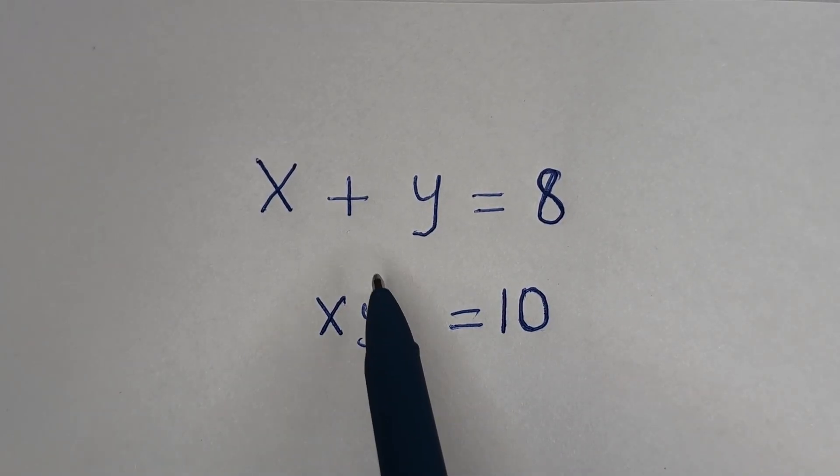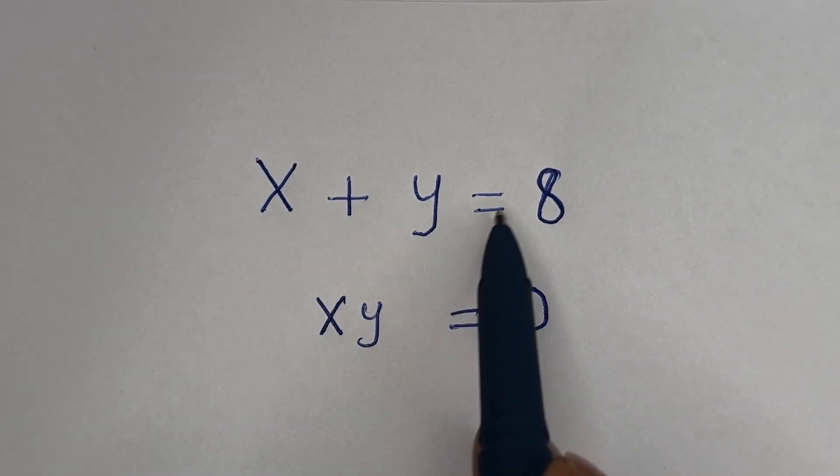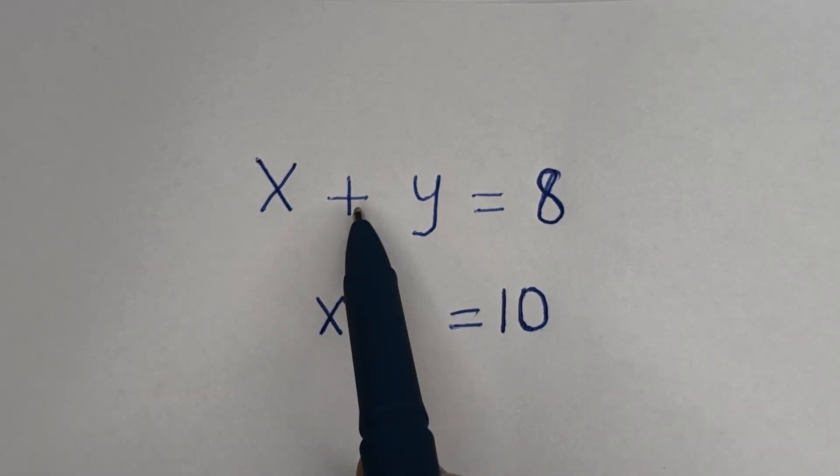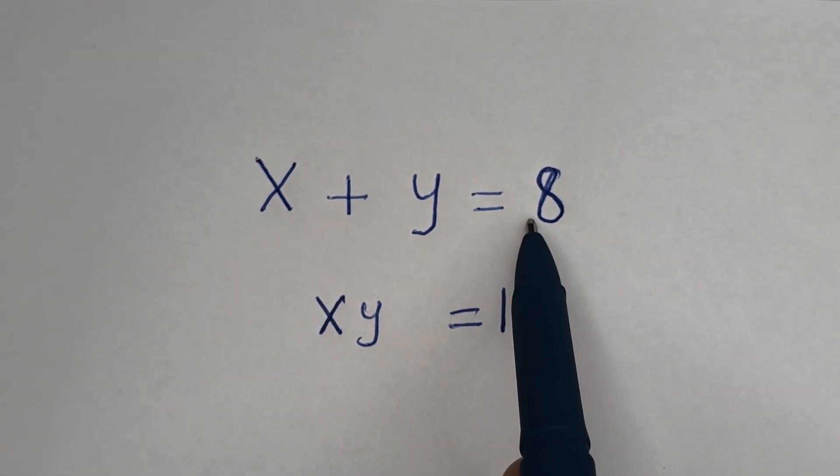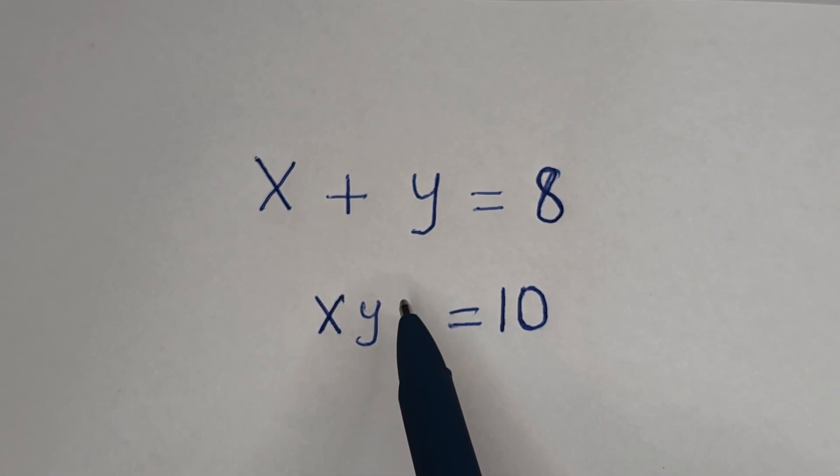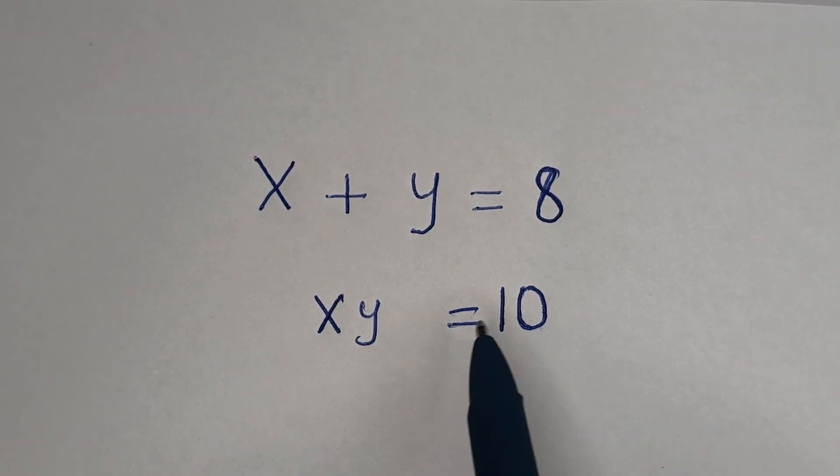Hello. How to solve for x and y in this equation: x plus y is equal to 8, and x times y is equal to 10.